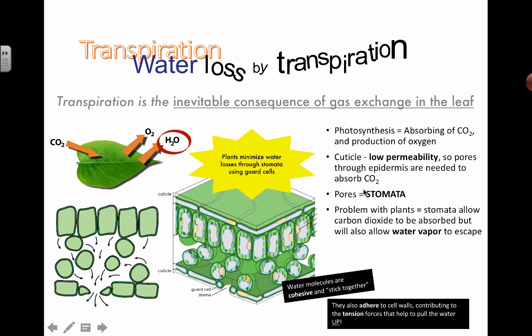Those pores are called stomata. The problem for the plant is that stomata allow carbon dioxide and gases to get in, but they also allow water vapor to escape, and this entire process is called transpiration. In general, transpiration is the movement or loss of water through a plant through the stomata, and the mechanism by which water gets pulled up through the plant.